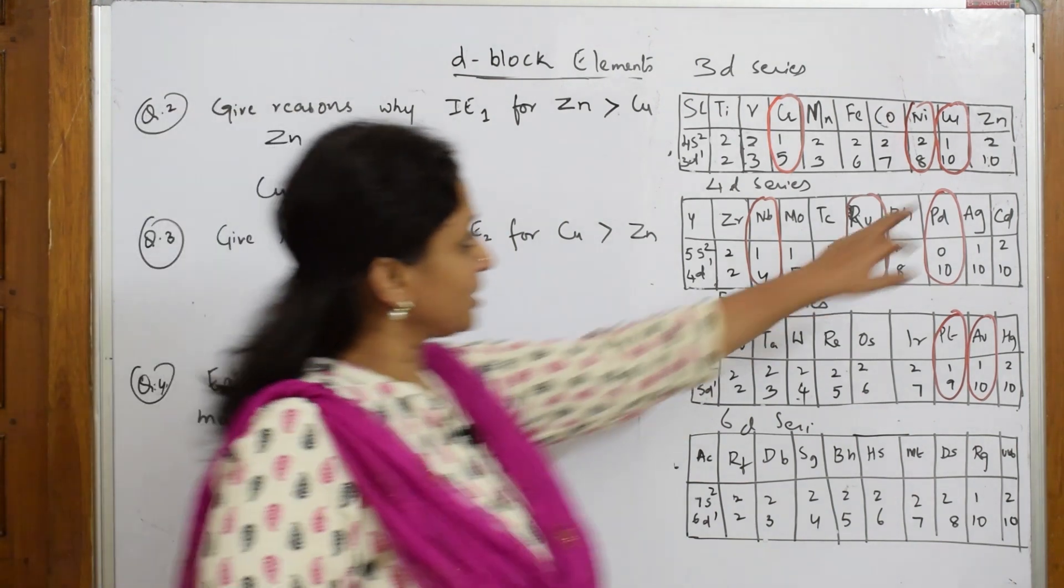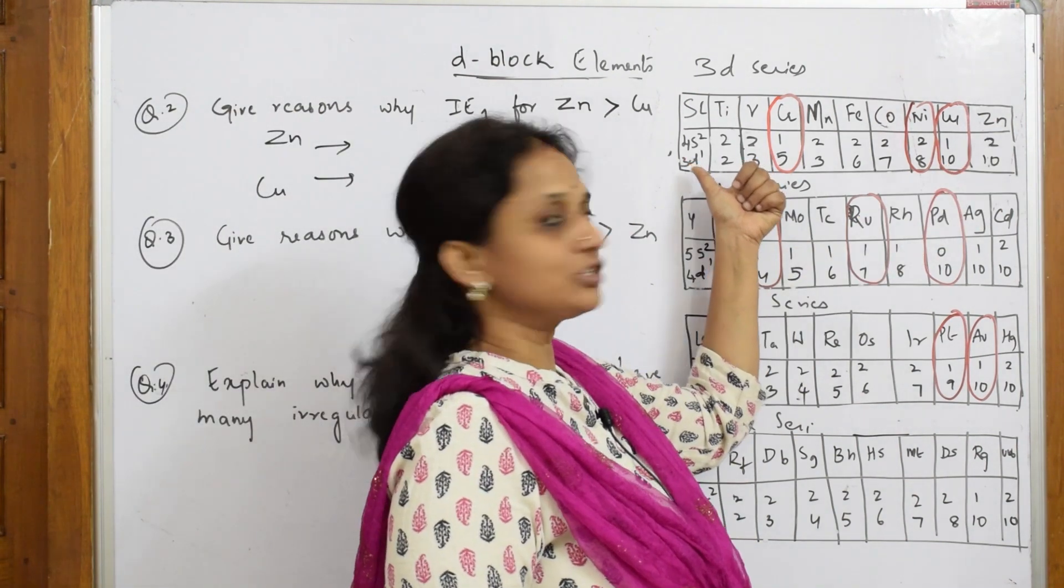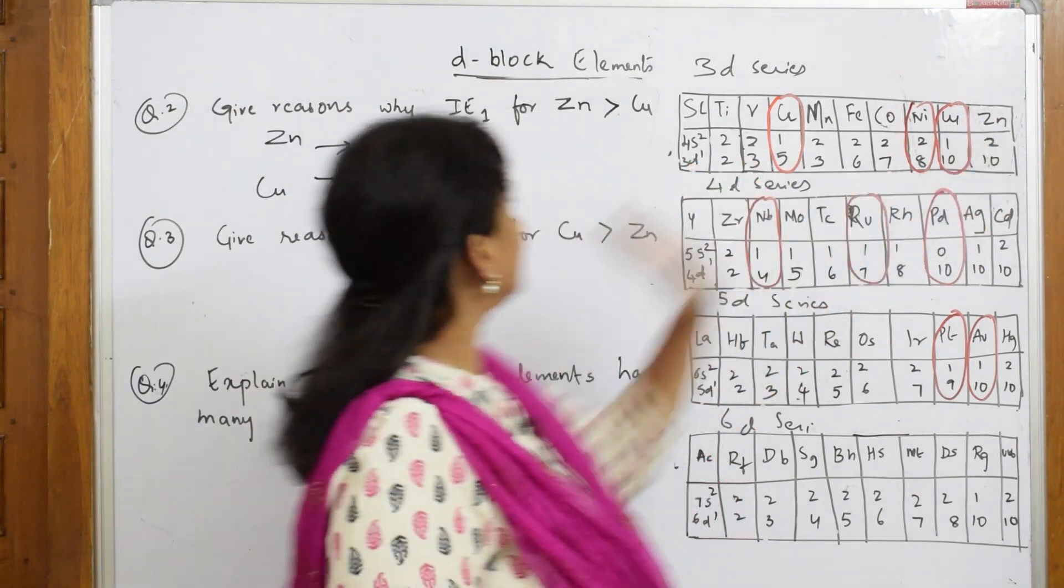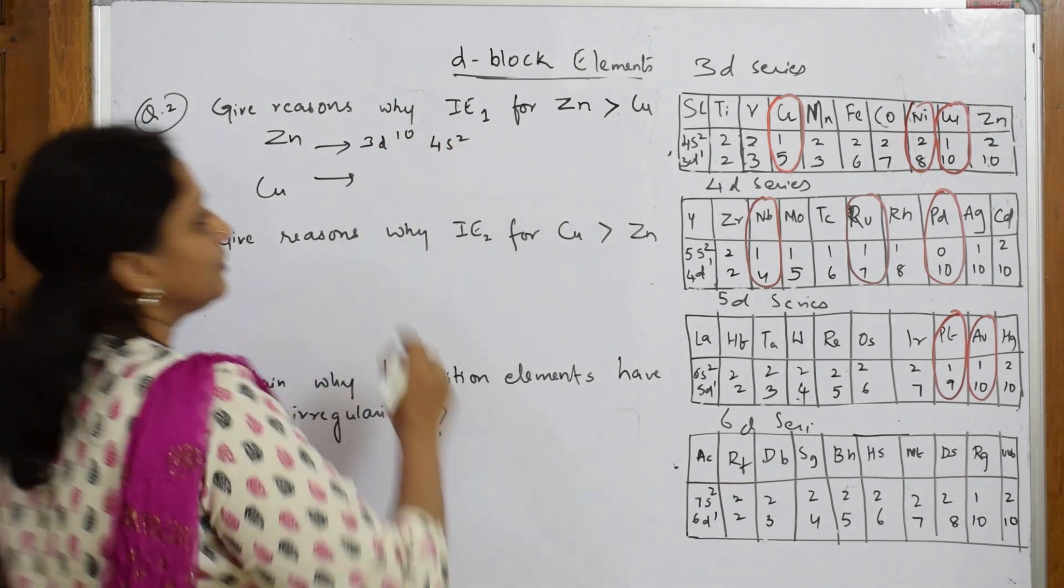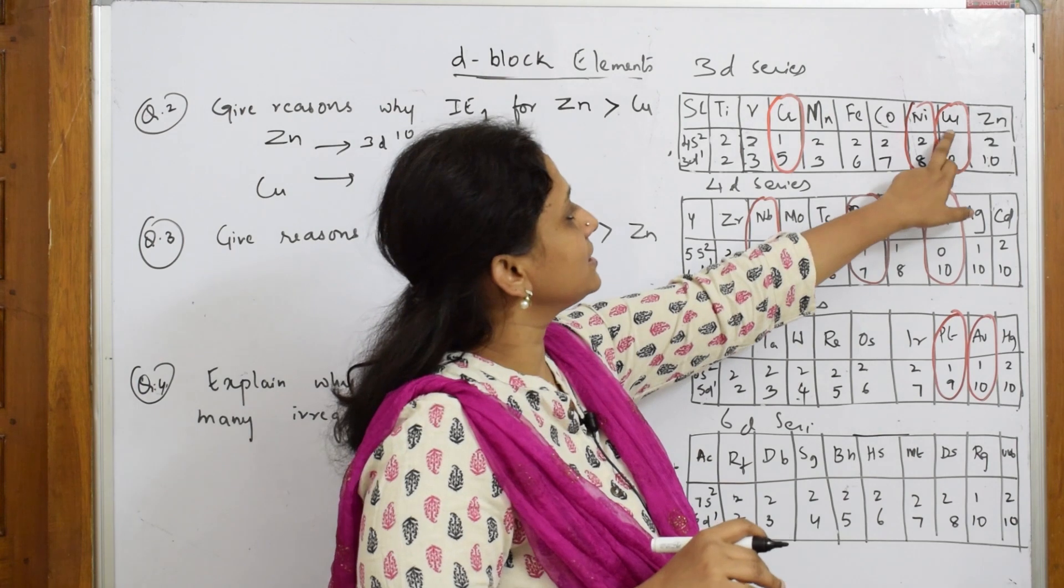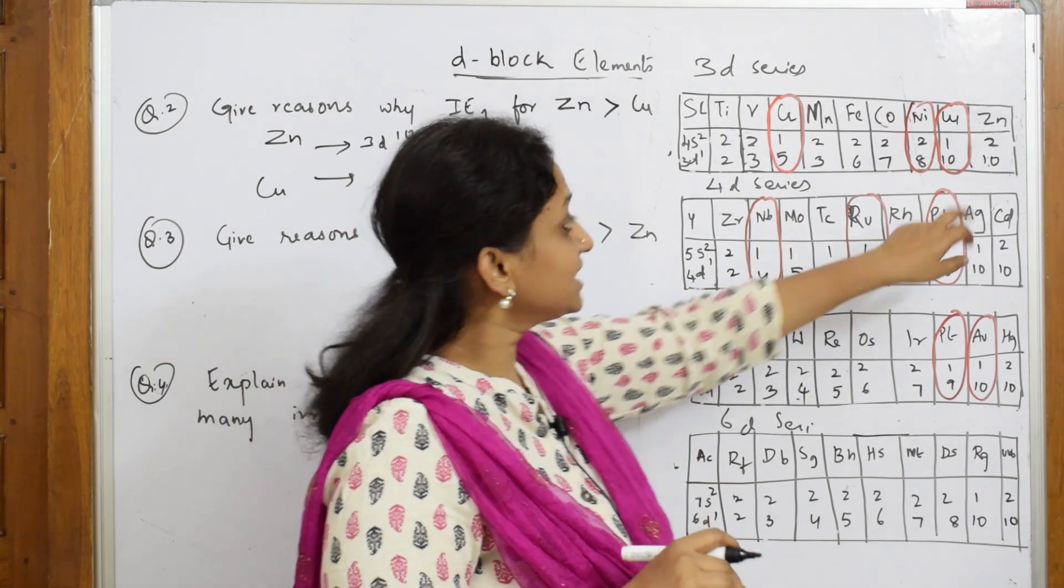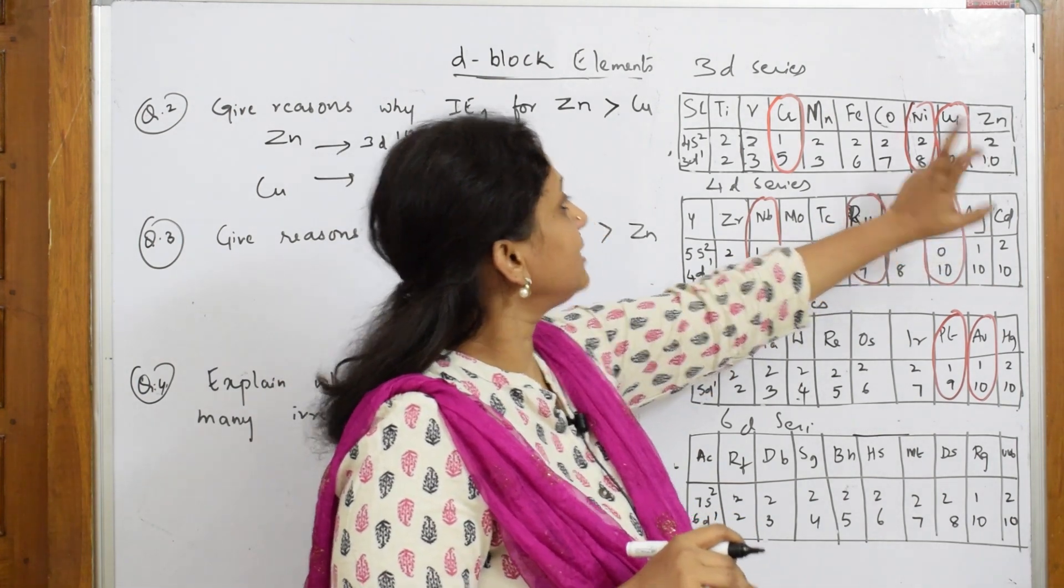Let us write the configuration. Zinc, the configuration belonging to 3d series, is 3d10 and 4s2. When I come back to copper, copper is here - the configuration is 3d10 4s1.